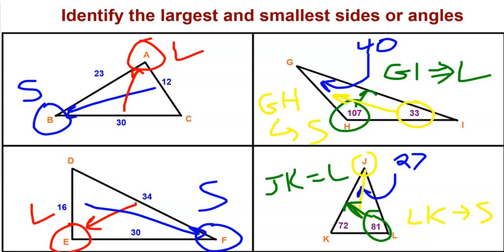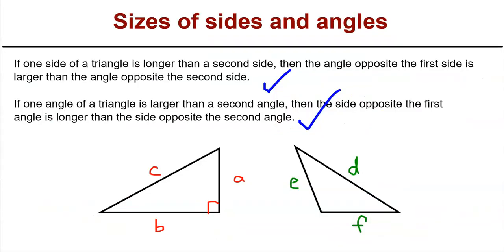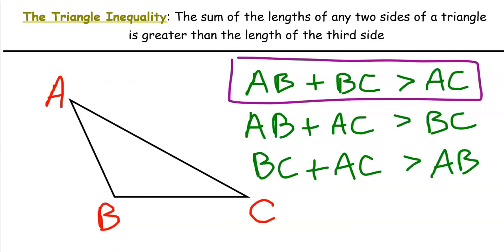So to summarize, two important things about triangles: first, the larger the angle, the larger the opposite side, and the larger the side, the larger the opposite angle. And second, any two sides of a triangle must add up to be greater than the length of the third side — this is called the triangle inequality.